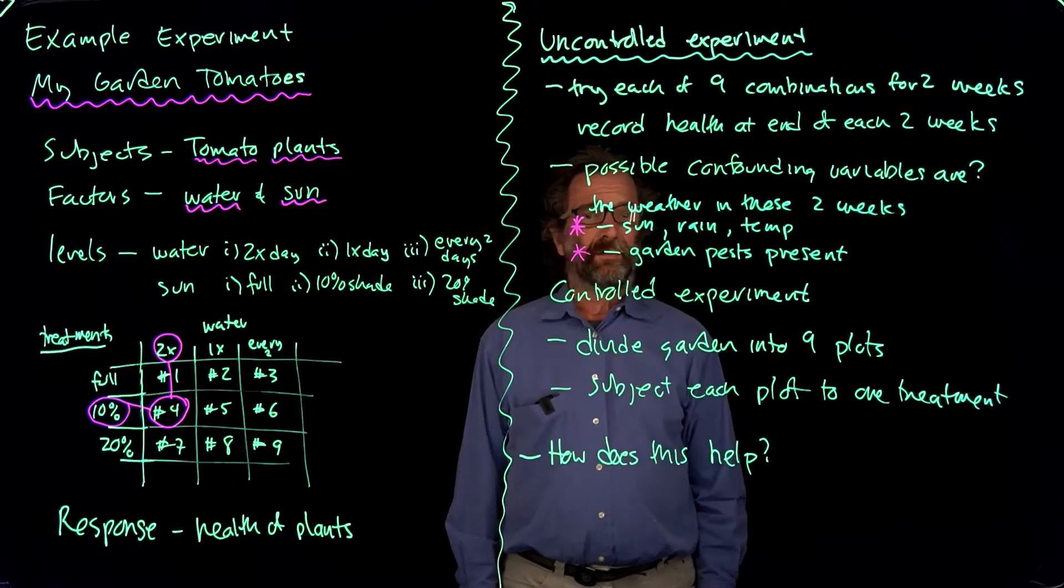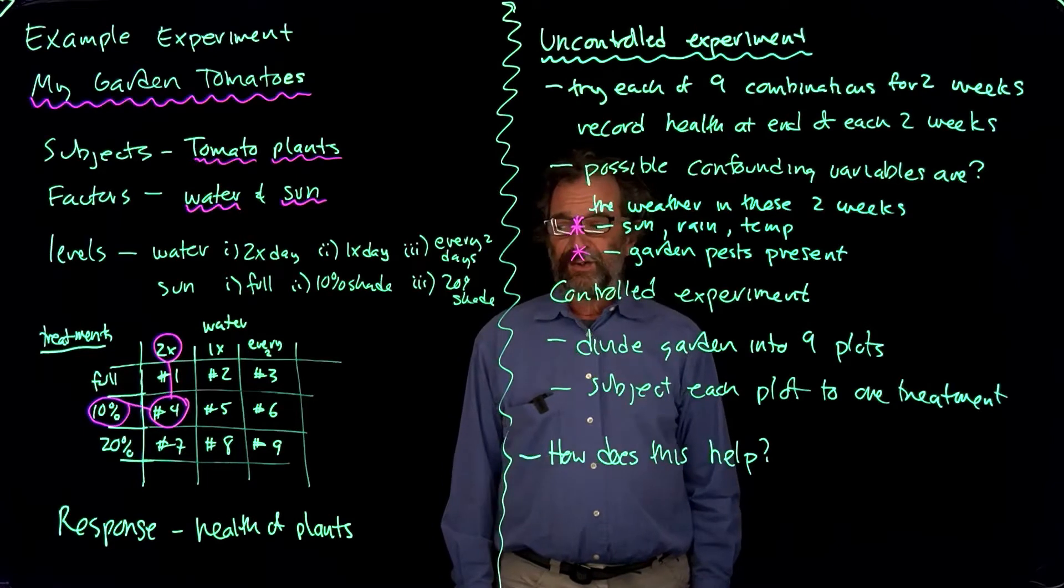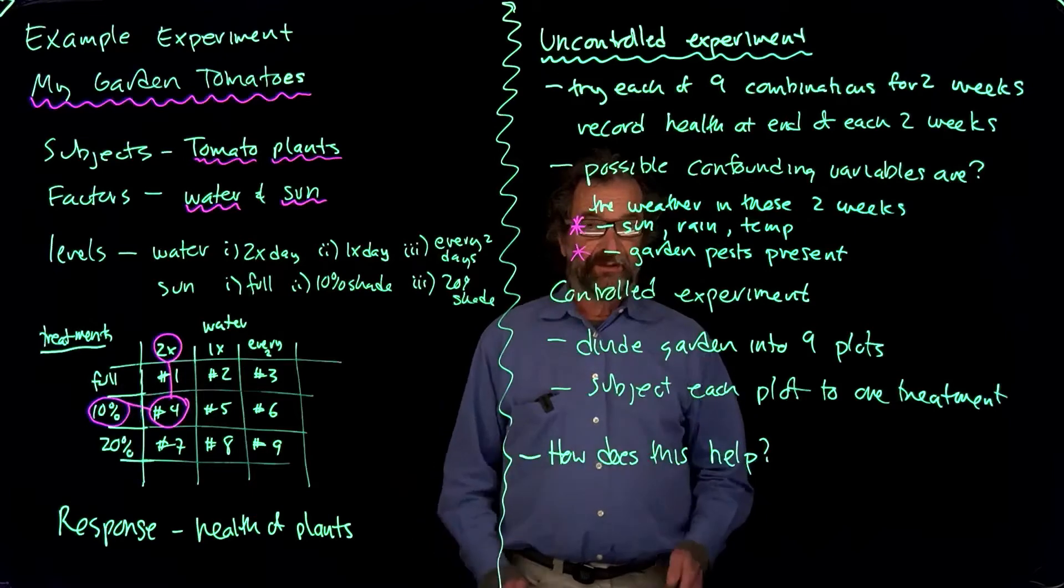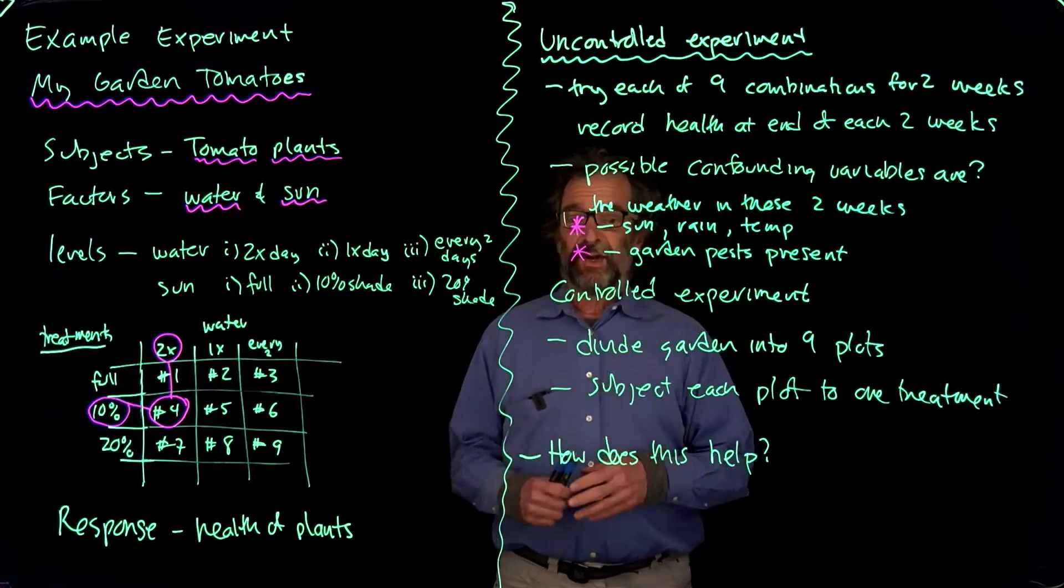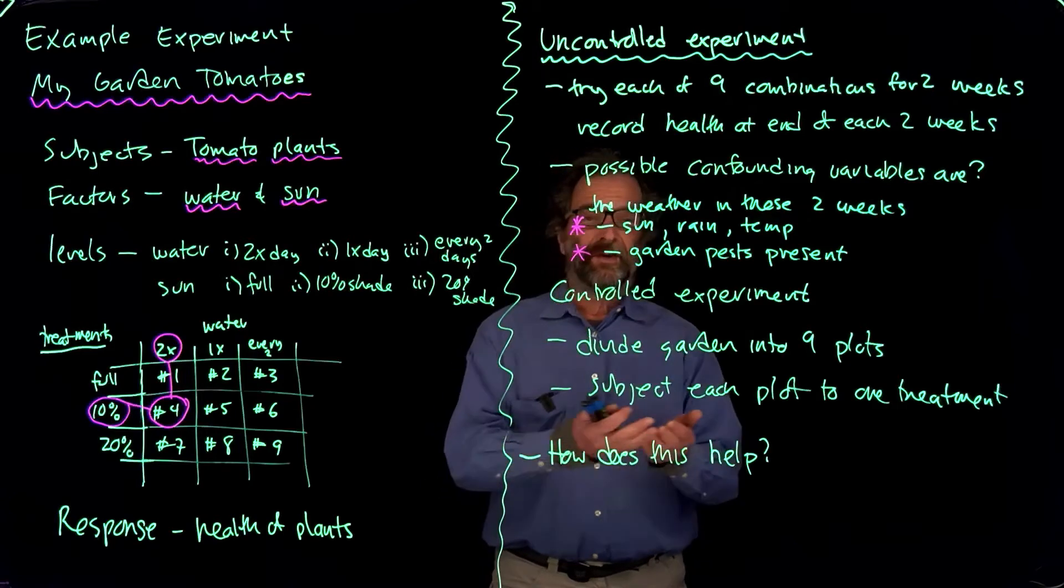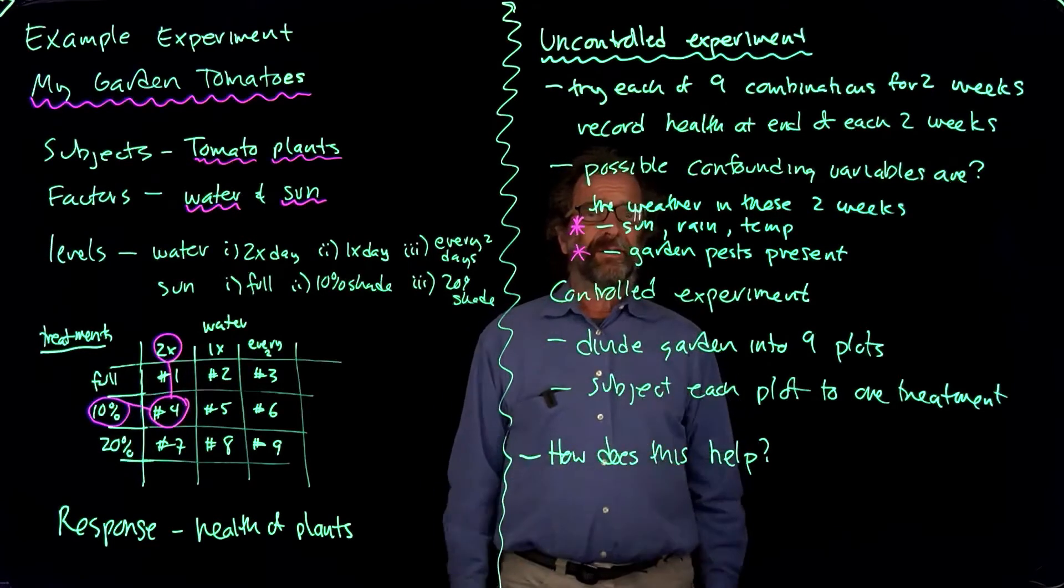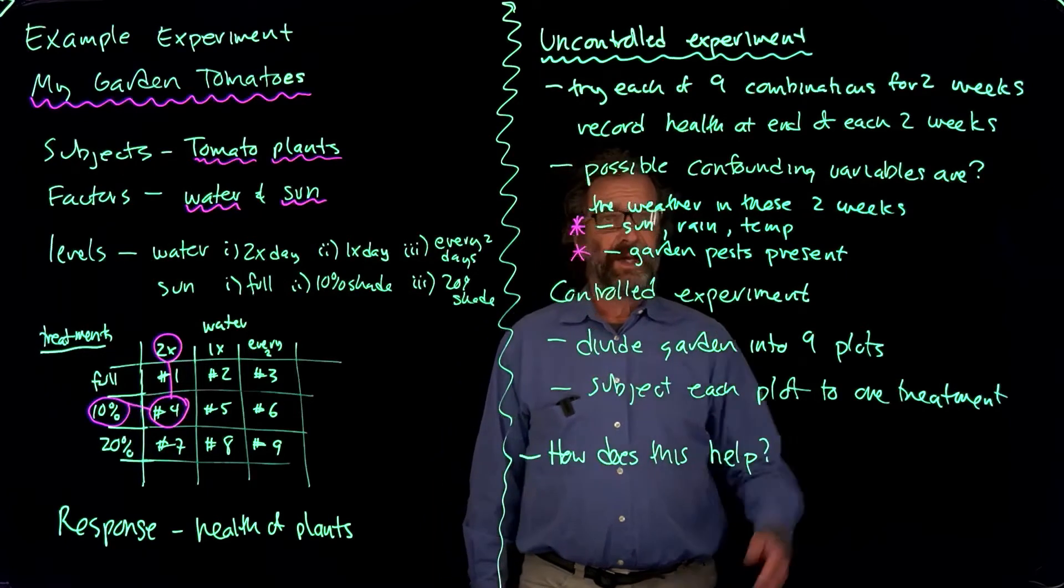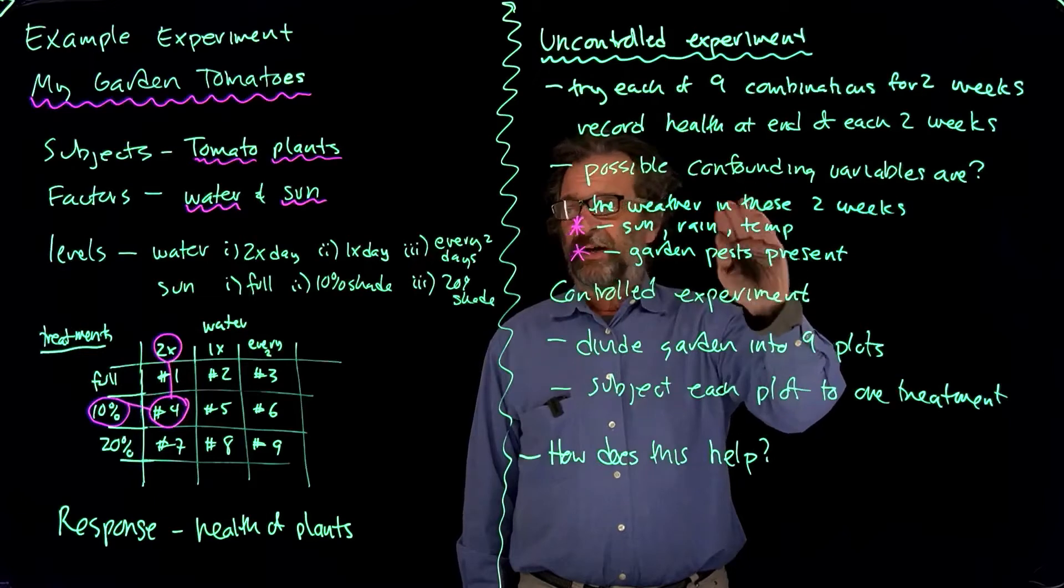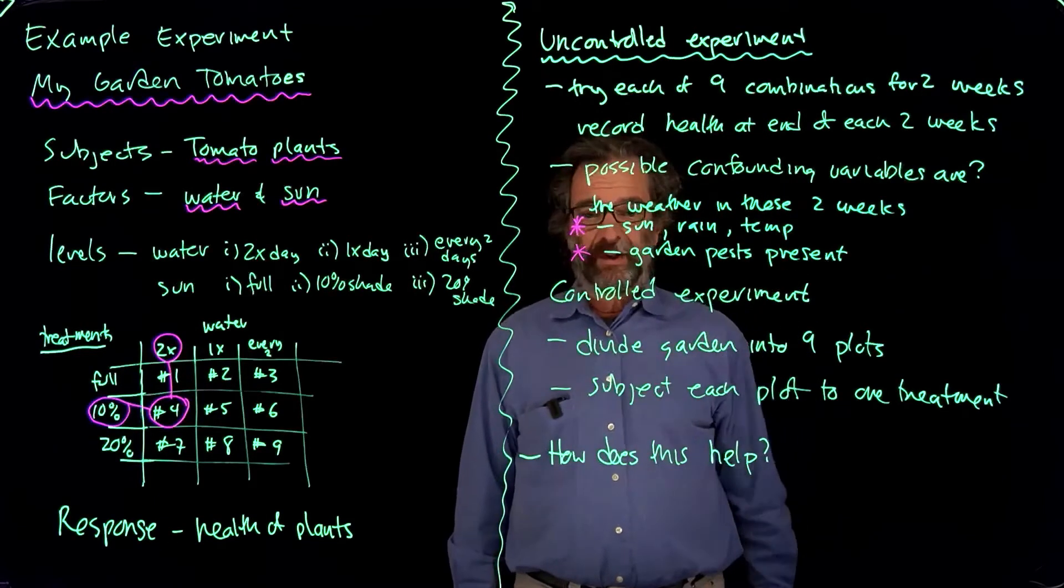So garden pests and the weather could be responsible. And since those change in an uncontrolled way, every two weeks they're going to be different. Your watering scheme is also different. The weather changes at the same time the watering scheme changes, and we don't know which one's responsible for the results. It could be the weather, it could be the watering. So they're called confounding variables. That's what happens when you have an uncontrolled experiment. Other things change at the same time the treatments change, and we don't know which one's responsible for the results.